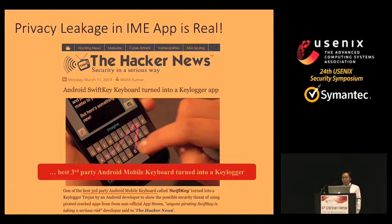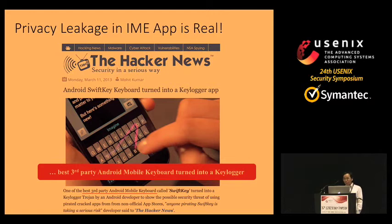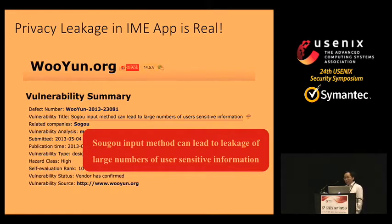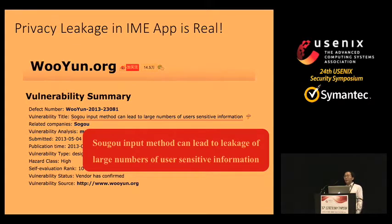This threat is real. One of the best third-party Android mobile keyboards, SwiftKey, was shown to be turned into a keylogger. Recently, the Japanese government asked its employees not to use the Baidu IME app due to suspicion of spying on users. A famous hacking site, WuYun, disclosed that a version of the popular IME app SoGo — downloaded hundreds of millions of times — may lead to leakage of large amounts of user-sensitive information.